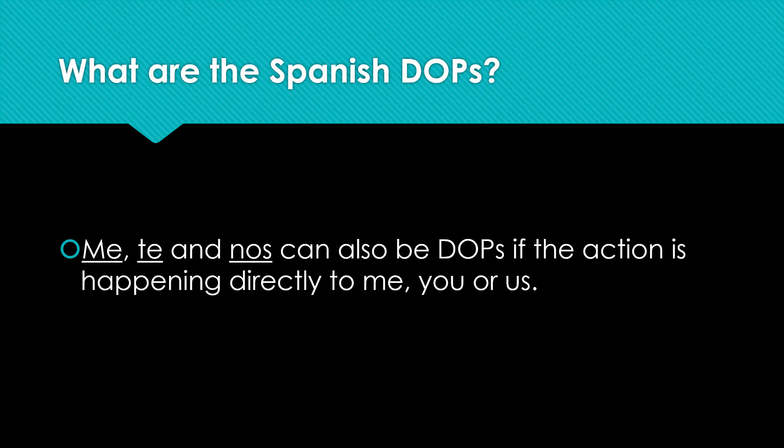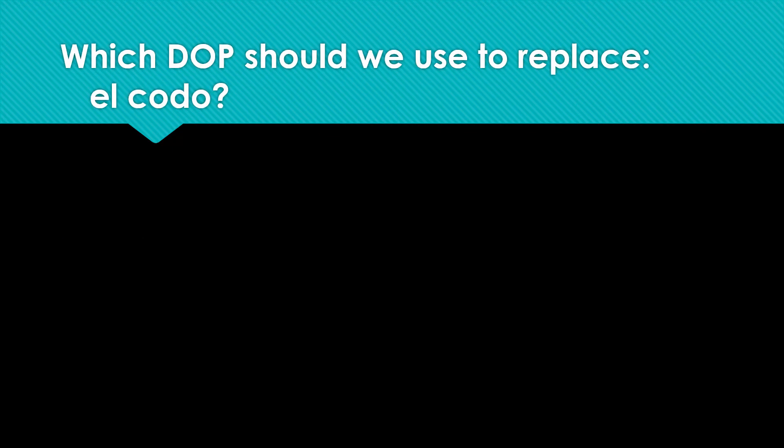For example, if you hit me — me pegas — the me means the action is happening to me, and me is the direct object pronoun. We're not going to focus on these today, though. Now for some examples. Which DOP should we use to replace el codo? The correct answer is lo. Lo would replace el codo.